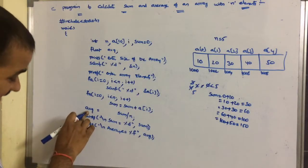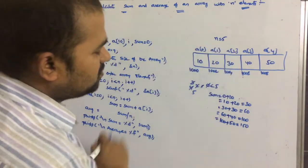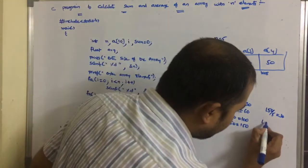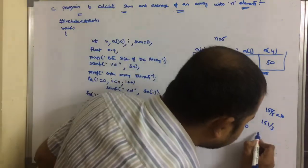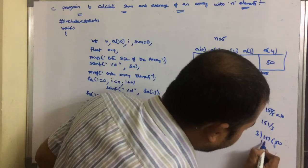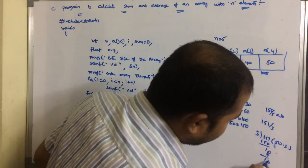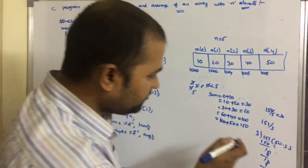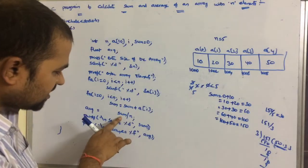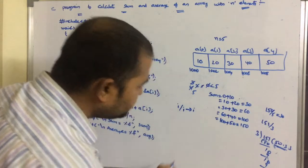Next, we calculate the average: abc = sum / n = 150 / 5 = 30. But consider if sum were 151 and n were 3 — the result should be 50.33. However, since sum is of type integer and n is of type integer, integer divided by integer gives only an integer result, so it would display only 50 instead of 50.33.